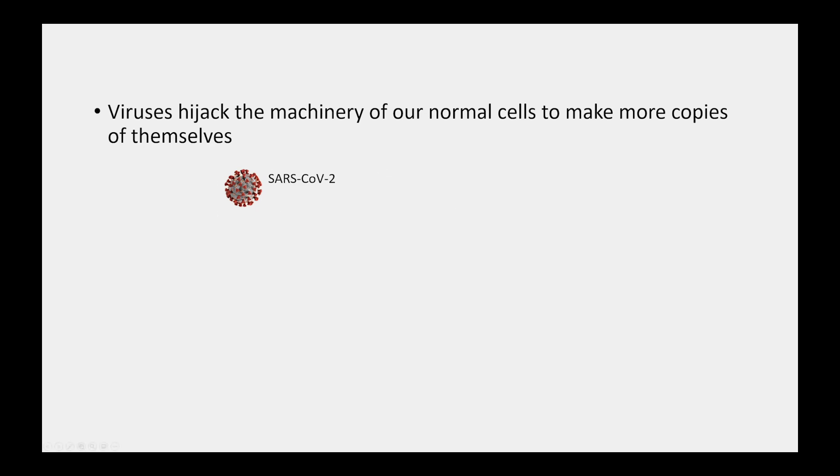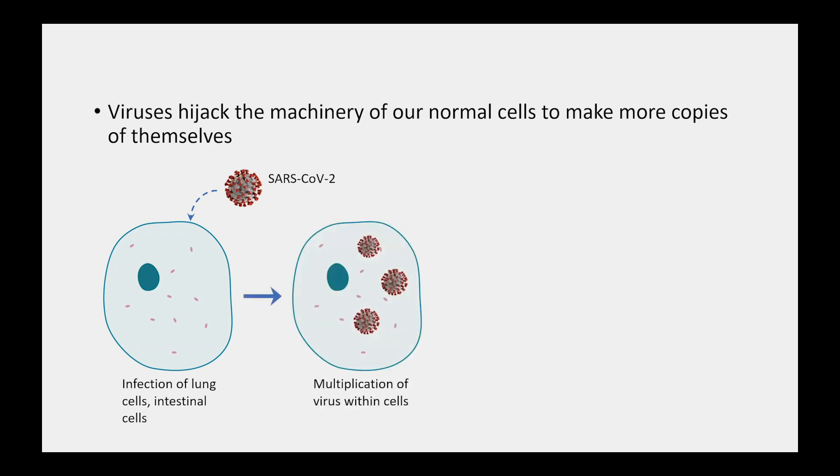You probably recognize this picture, a very famous diagram of the way that the virus looks. When a person unfortunately becomes infected, that virus travels through their airways and starts to infect the tissues of the lung cells and intestinal cells. Once it contacts a cell, it starts to make more copies of itself, and ultimately those copies get released by the cell into the airway or bloodstream.